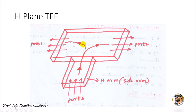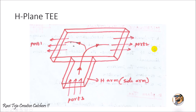Whenever we give an input signal through port 3, the microwave signal will be equally distributed and will come out from port 1 as well as port 2. In an E-plane T, the signal given through the E arm is distributed from port 1 and port 2 with a 180-degree phase shift. But in the H-plane T, whenever a signal is given as input from the H arm, it is distributed through port 1 and port 2 with no phase shift.